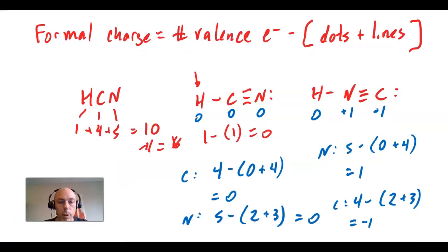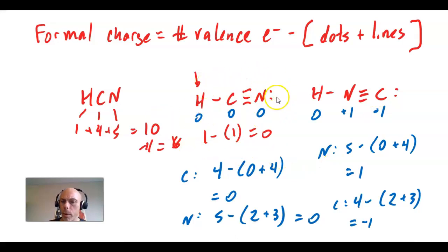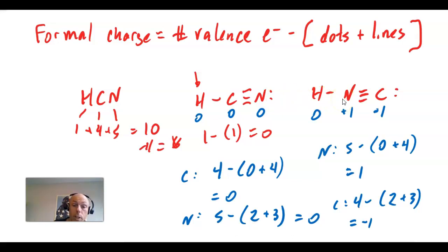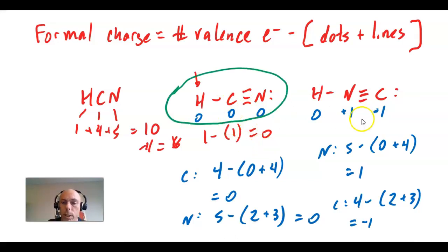Back to our example. Notice that the sum of the formal charges in both Lewis structures is zero, since this is a neutral molecule. Zero plus zero plus zero is zero, and zero plus positive one plus negative one is zero. Notice in this left-hand Lewis structure, which we presume to be right because carbon should be central, all the formal charges are zero — and that's preferred. Whereas in the right-hand Lewis structure they aren't all zero. This is further proof that it's the left-hand Lewis structure that is correct, because the formal charges are all zero, or lesser and closer to zero than in the right-hand one.